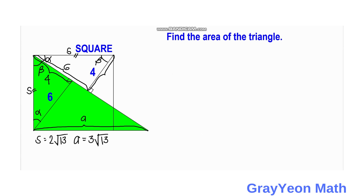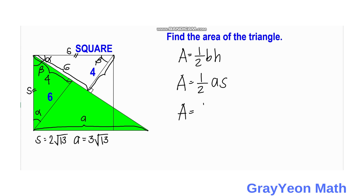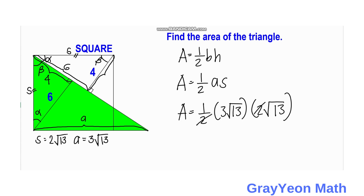Now for the final step, we are ready to find the area of this triangle. Area equals one-half times the base times the height. In this case the base is a and the height is s. So area equals one-half times 3√13 times 2√13. The two cancels, and √13 times √13 equals 13, giving us 13 times 3. Therefore, area equals 39 square units.